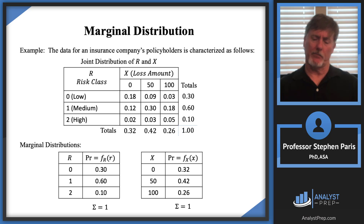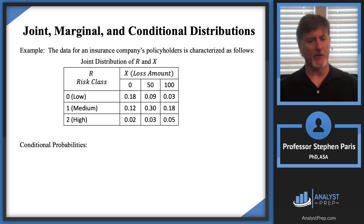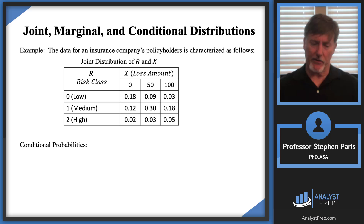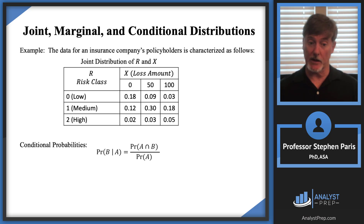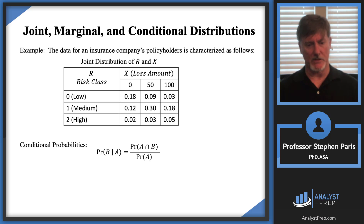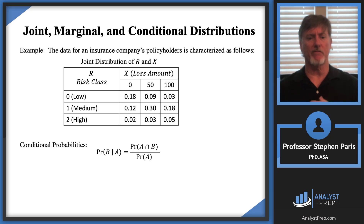Back in module one, we discussed conditional probabilities. The conditional probability of event B given event A is the ratio: P(A and B) divided by P(A). We can apply this to joint distributions where the events involve random variables cap R and cap X.